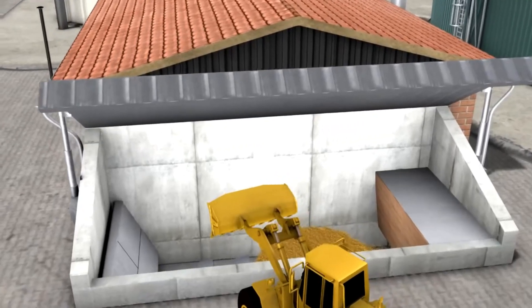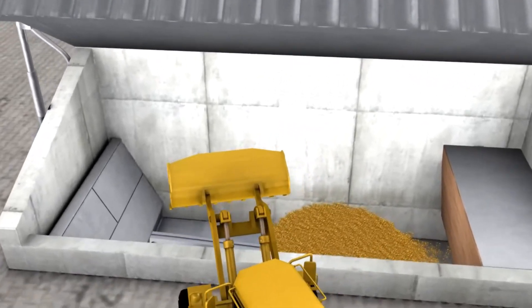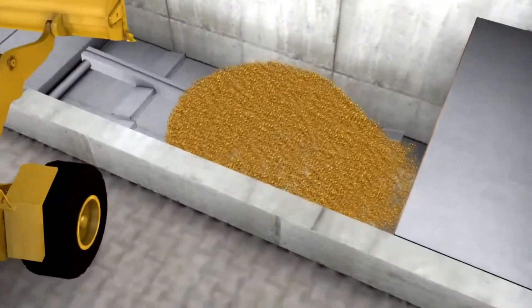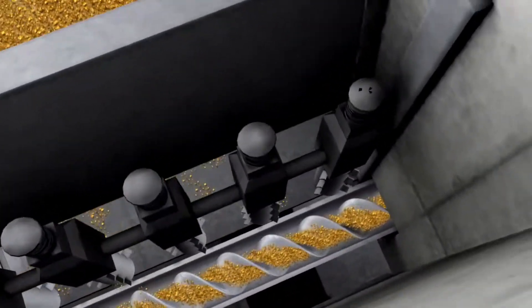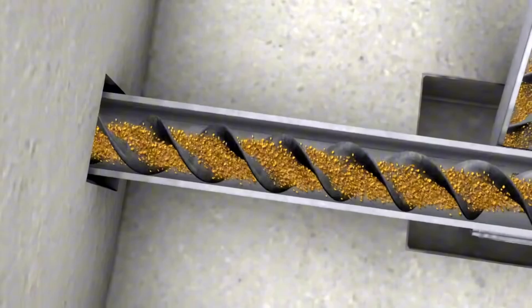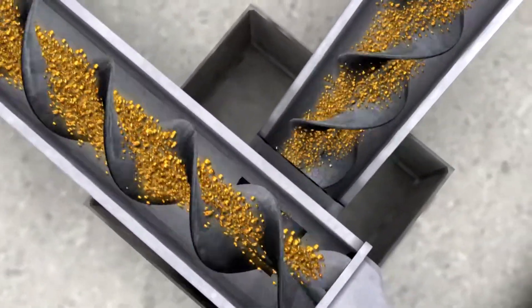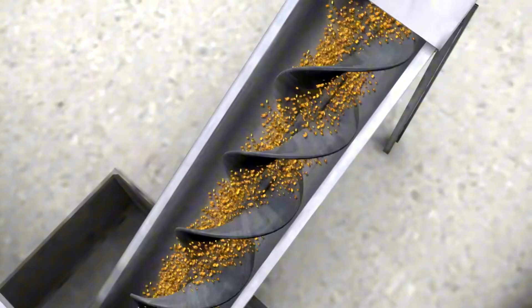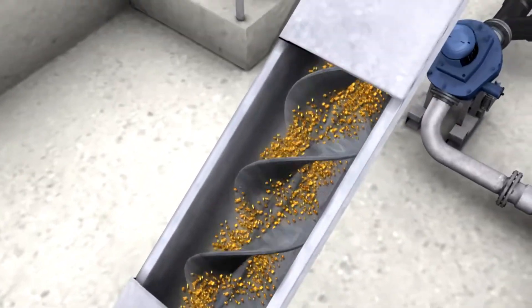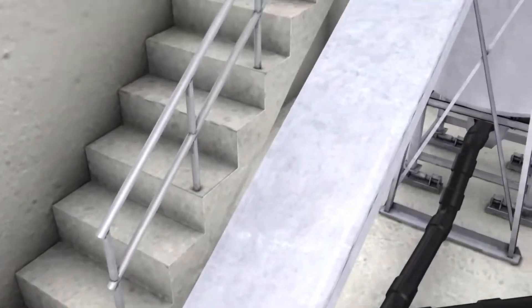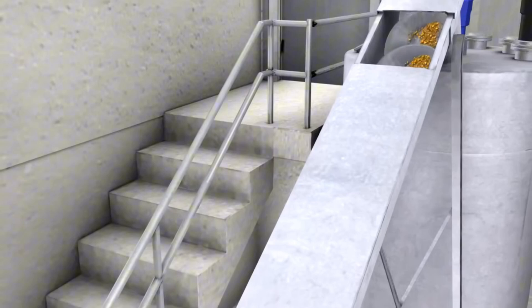The bunker is equipped with a walking floor, which transports the maize silage. Screw conveyors advance the input materials to the mixing container. Other agricultural or industrial byproducts can also be fed into the mixing system through other feeding systems, such as vertical mixers.